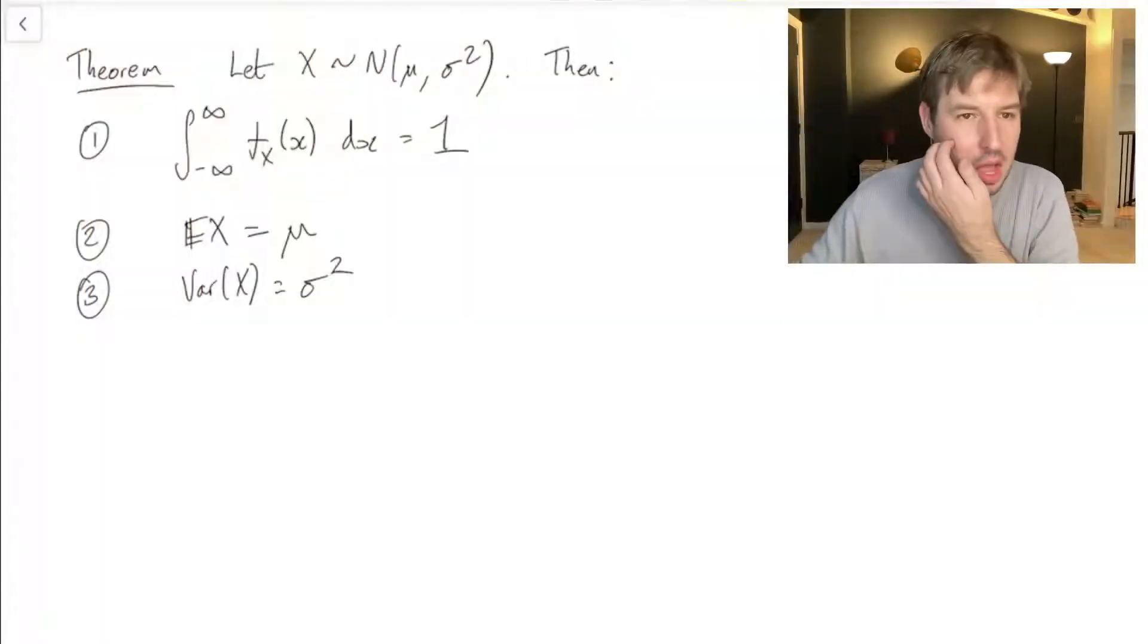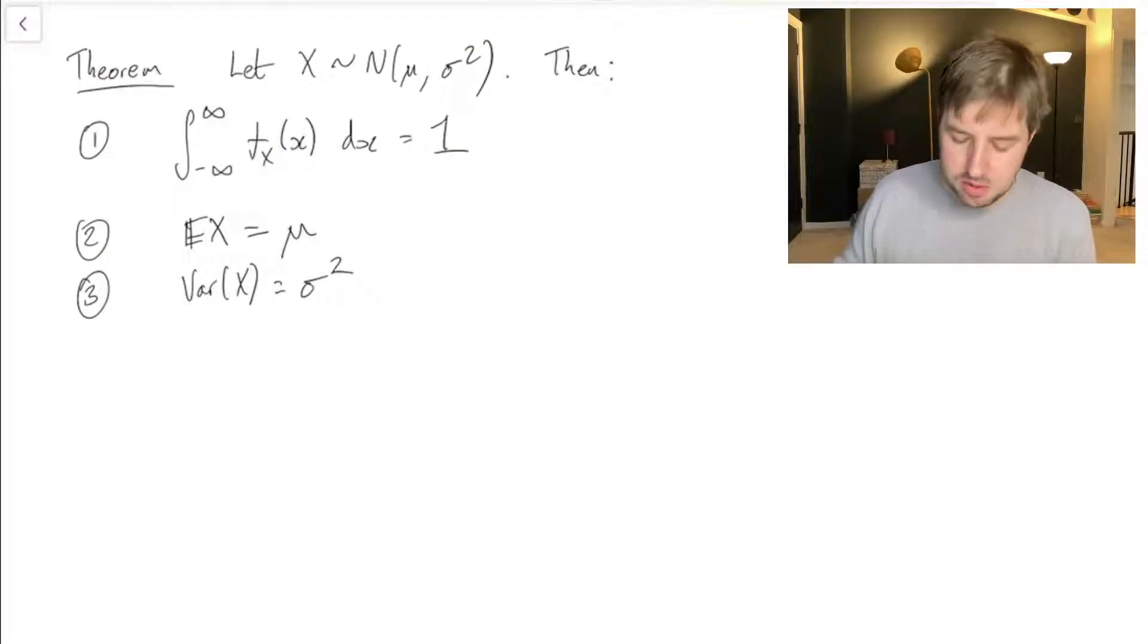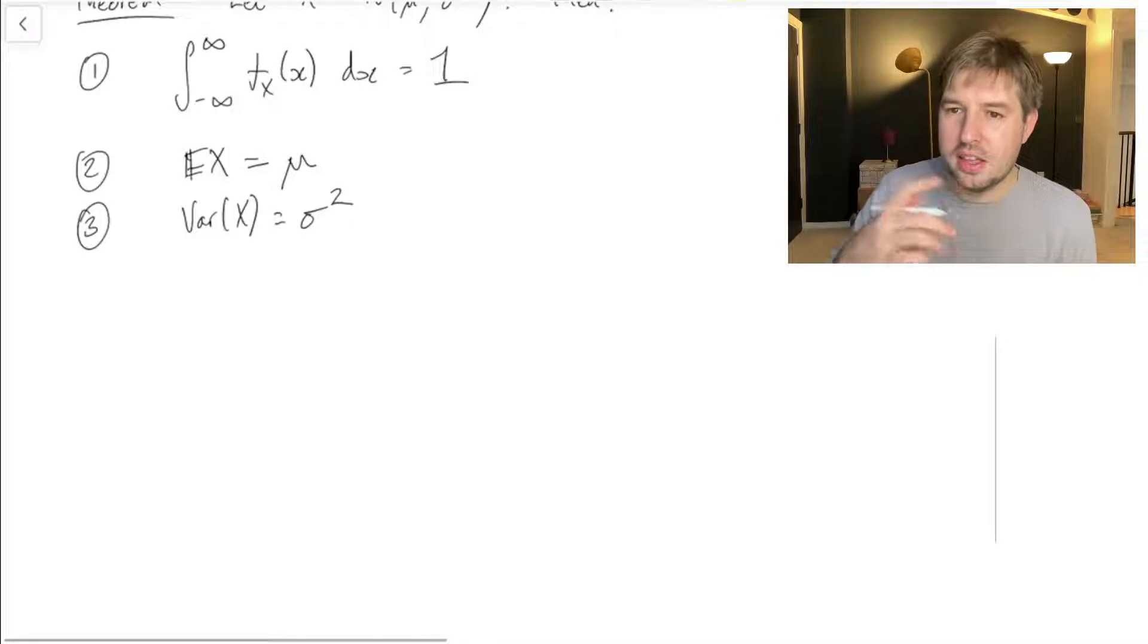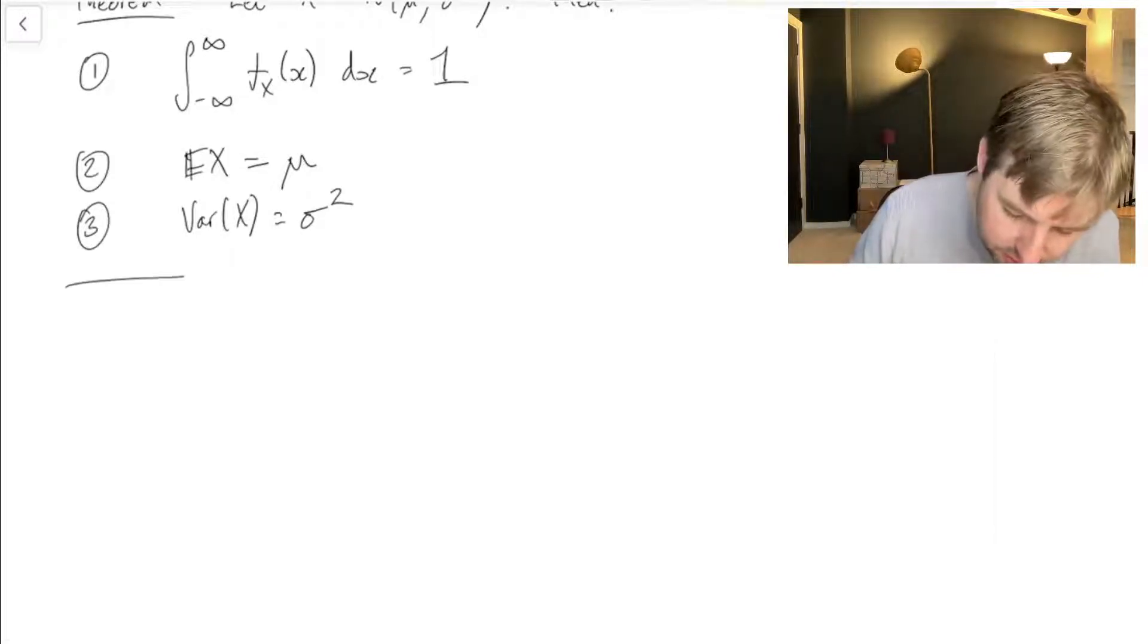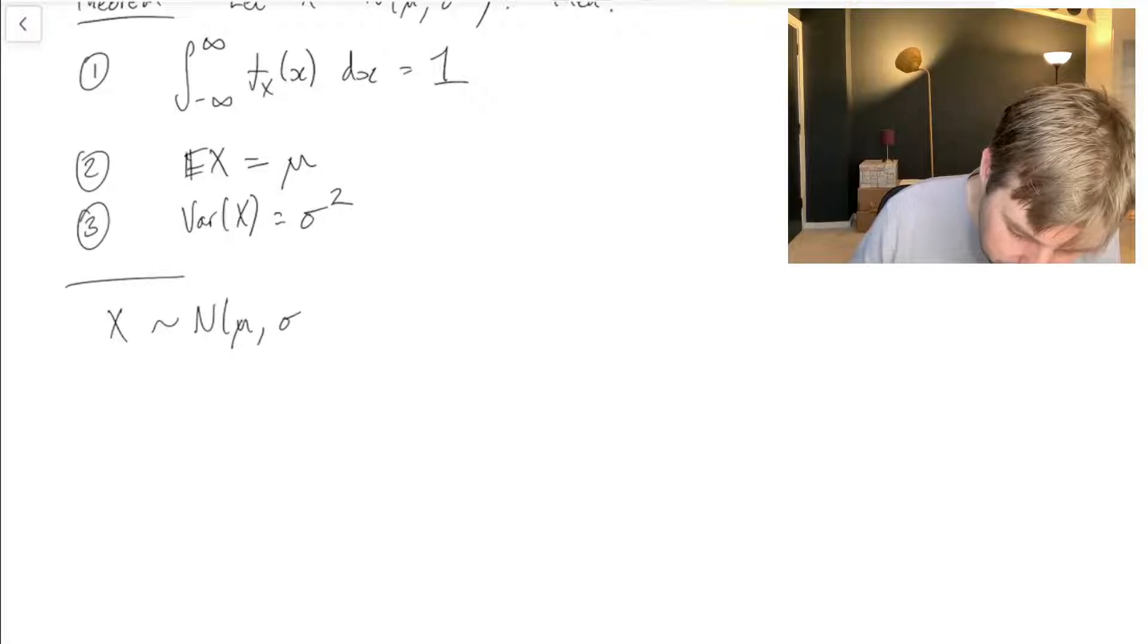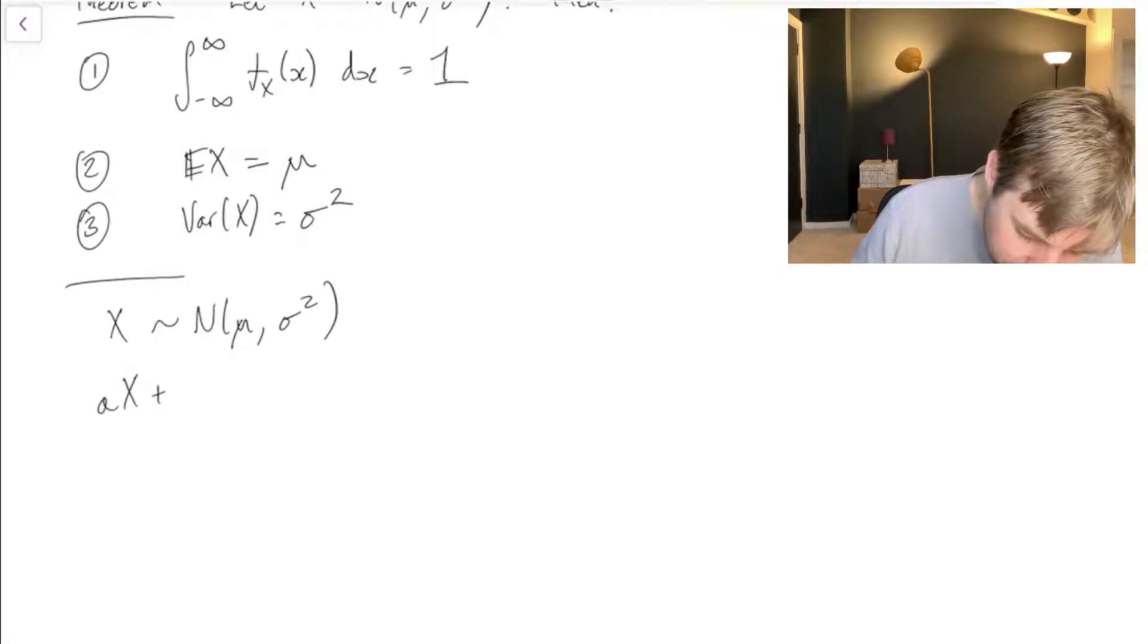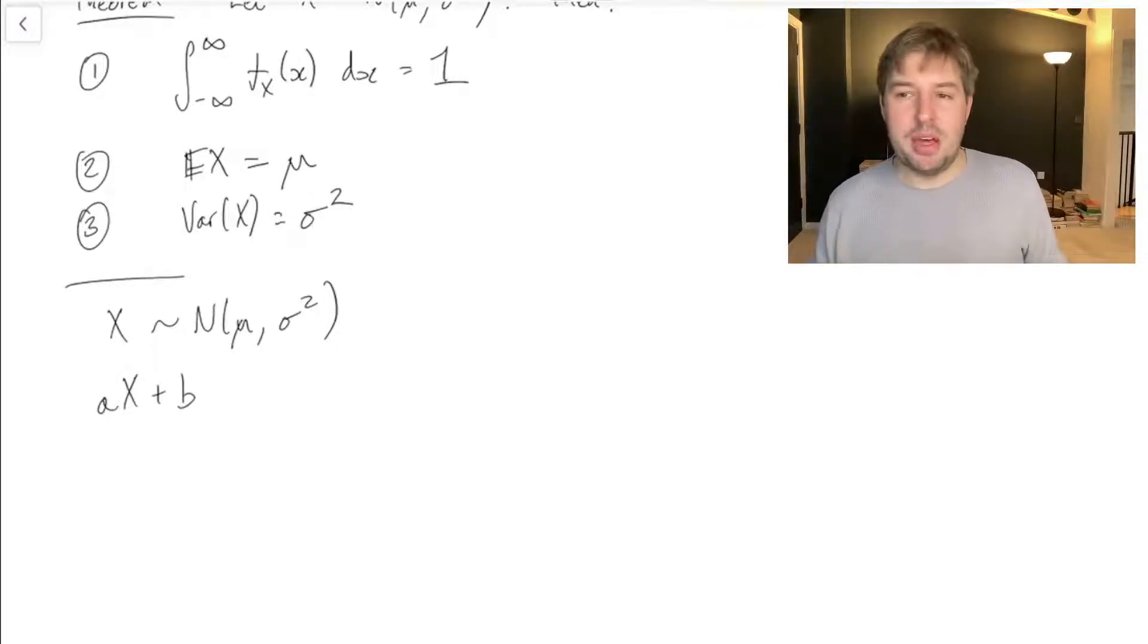Okay, so those are some basic facts we have about the normal distribution. There is one other thing I'd like us to think about, and that's if X is normal μ σ², then what if we look at aX + b? That's another perfectly legitimate random variable, it's a function of the random variable X. So what can we say about that random variable?